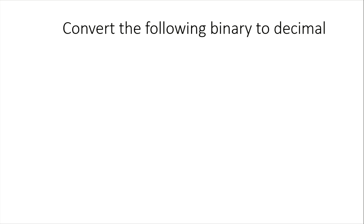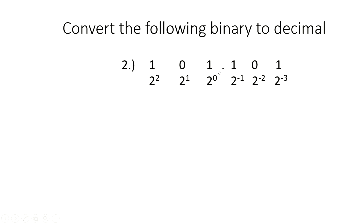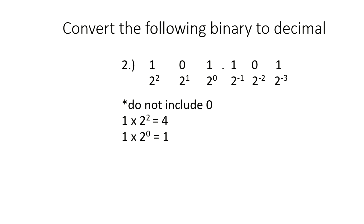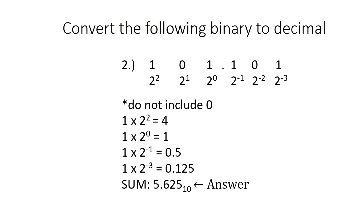What if we have a decimal point? The 2 raised to 0 starts at the one's digit place. So we have 2 to the 0, 2 to the 1, and 2 to the 2. On the right side, we have negative exponents: 2 to the negative 1, 2 to the negative 2, 2 to the negative 3. Excluding zeros, we compute: 1 times 2 squared equals 4, plus 1 times 2 to the 0 equals 1, plus 1 times 2 to the negative 1 equals 0.5, plus 1 times 2 to the negative 3 equals 0.125. The sum is 5.625 base 10.